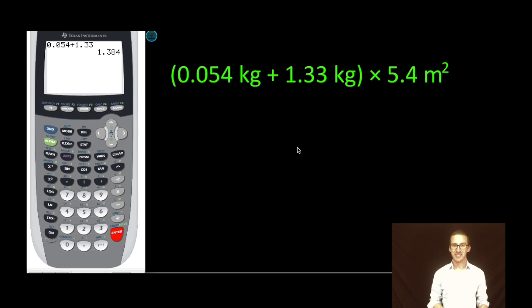As you look at this addition, our final answer has to match the measurement that is least precise. This measurement is precise to the thousandths place. This measurement is precise to the hundredths place. This one is less precise. But what I like to do since this is multi-step is I just write out the answer, 1.384 kilograms.